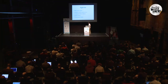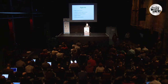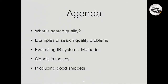Here's the agenda of my talk. First we will talk about what search quality is. Then we'll look at examples of search quality problems. Then I will describe three methods of how to evaluate information retrieval systems. Then we will look at signals — I have a bunch of signals for your inspiration. And finally we will look at how to produce good snippets if we have time.